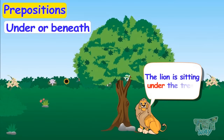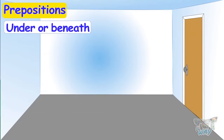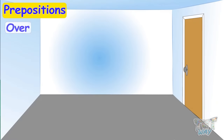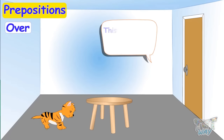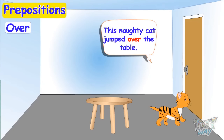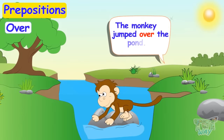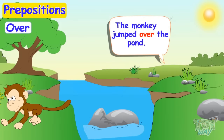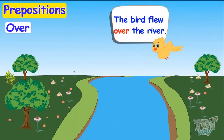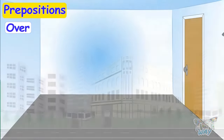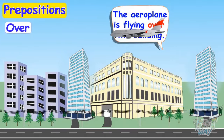The lion is sitting under the tree. Now it's time for the next preposition and it's 'over'. This naughty cat jumped over the table. The monkey jumped over the pond. The bird flew over the river. The aeroplane is flying over the river.